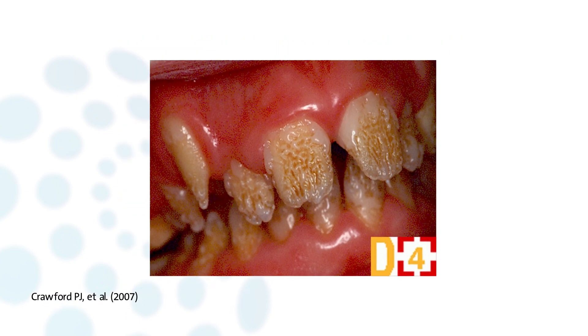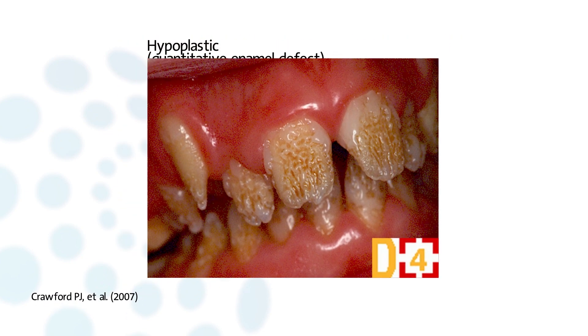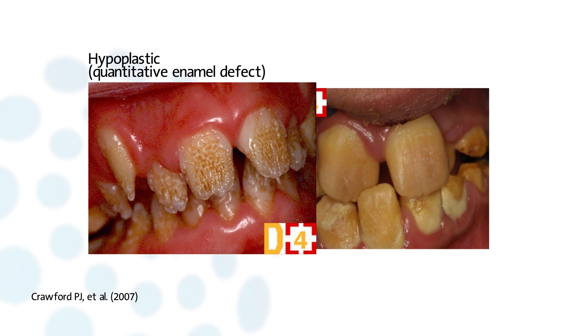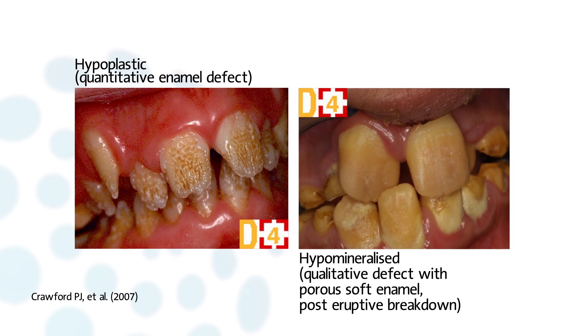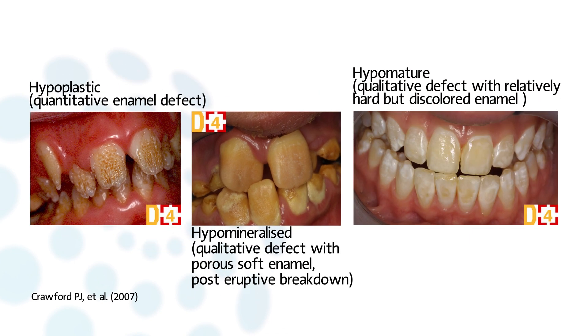Witkop's classification has been commented on by other authors who have proposed adding molecular data. Amelogenesis imperfecta are rare diseases. They can exist as isolated genetic diseases, where the only developmental anomaly is limited to enamel, or they can be associated with other symptoms in syndromes.